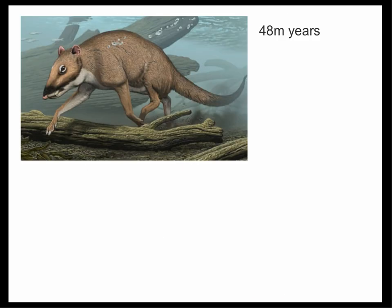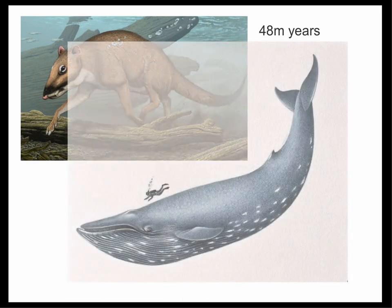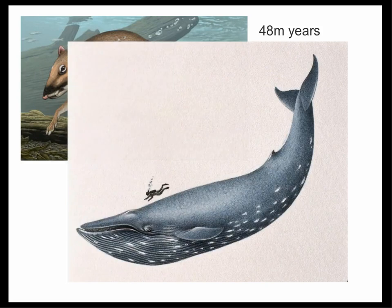Here's a particularly strange example of evolution. This small deer-like creature existed about 48 million years ago. Over millions of years, it changed its shape dramatically as evolution occurred. And today, the modern descendant of that ancient small deer is the whale. Isn't it strange to think that the massive blue whale is descended from that tiny creature?